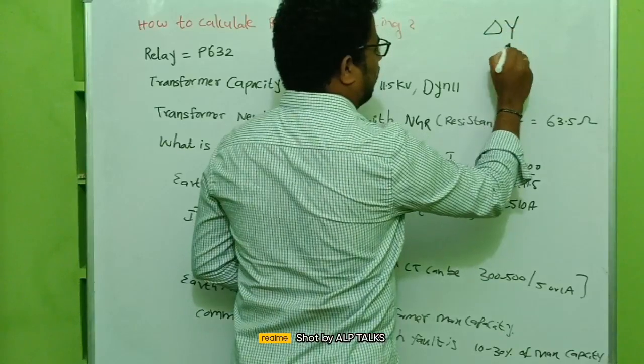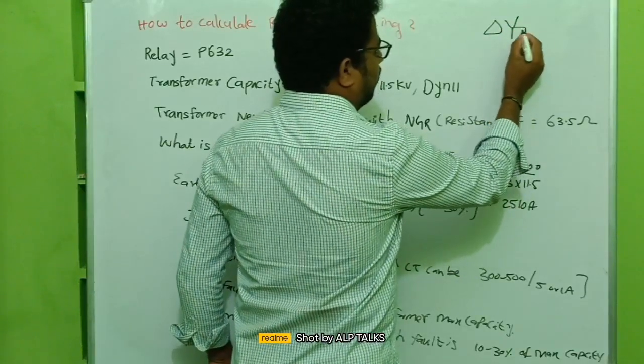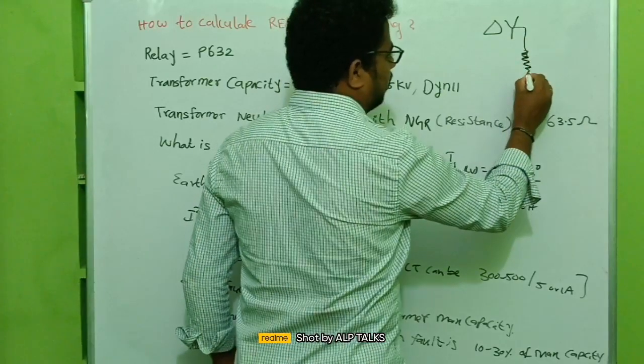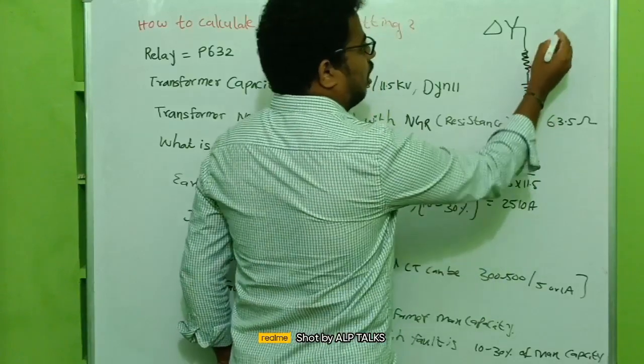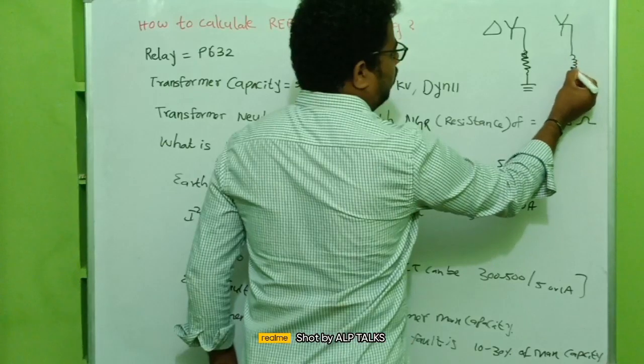There will be neutral in the delta star connection. Here we can have a direct resistor and it can be grounded. Another way is we will be having one transformer here and we are going to connect a resistor here.